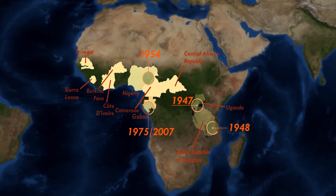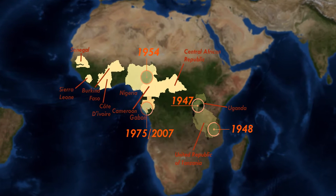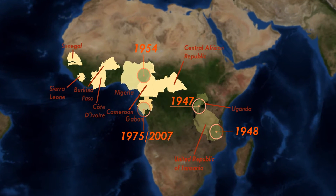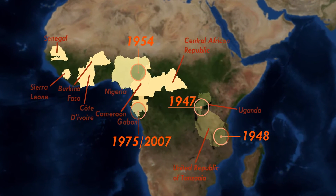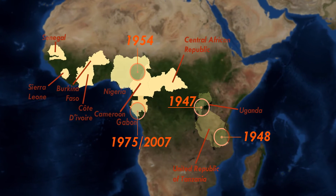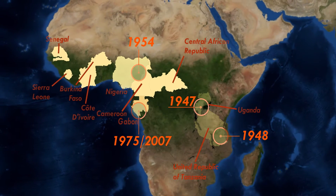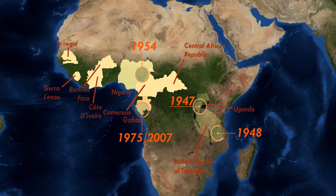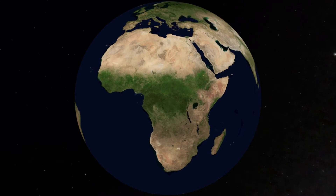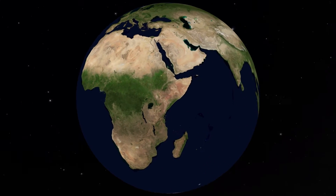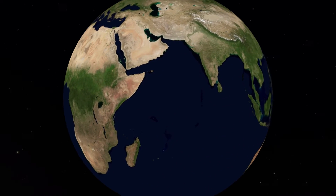We know that Zika virus has been around since the late 1940s, early 1950s, when it was first detected in Africa, and that it's been circulating in very low levels, maybe impacting 10 to 15 people.